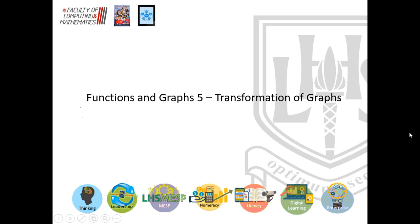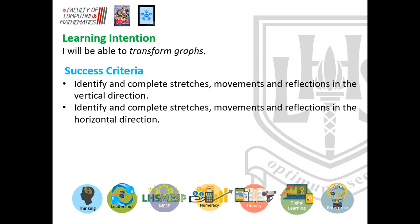Hi there, welcome to the fifth video on the functions and graphs topic, looking at the transformation of graphs. There are two sets of things we're going to look at today: being able to identify and complete transformations — stretches, movements, and reflections — in the vertical direction and in the horizontal direction. There are six different rules, and you'll have seen them before in some way, shape or form, either through trig graphs or quadratic graphs at National 5. I'm going to do a couple of examples and then you'll need to go do lots of practice.